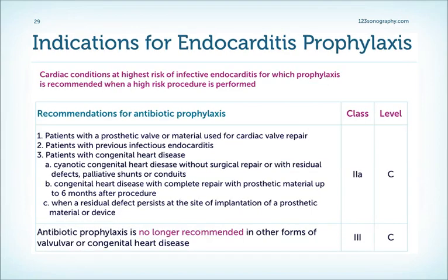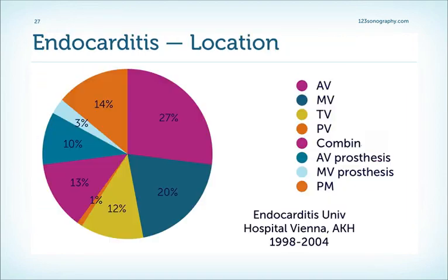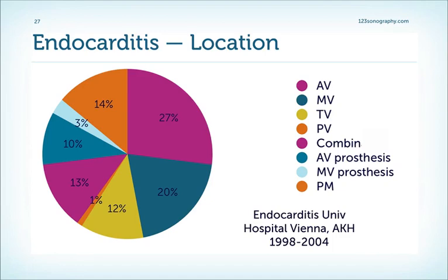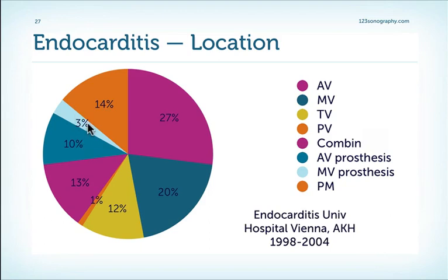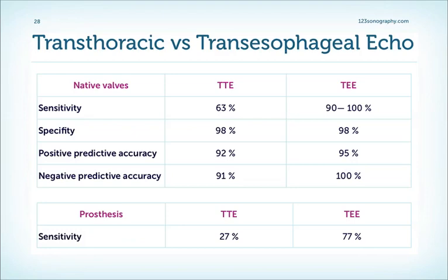At our institution, we have more patients with aortic valve endocarditis than mitral valve endocarditis, but a large proportion have endocarditis of prosthetic material — aortic valve prosthesis, mitral valve prosthesis, and pacemakers. Regarding transthoracic versus transesophageal echocardiography: TEE is obviously superior with a very high sensitivity and specificity. However, with improvements in 2D transthoracic imaging, the gap is probably not as large as it may seem, and in many patients you can make the diagnosis with transthoracic echo.